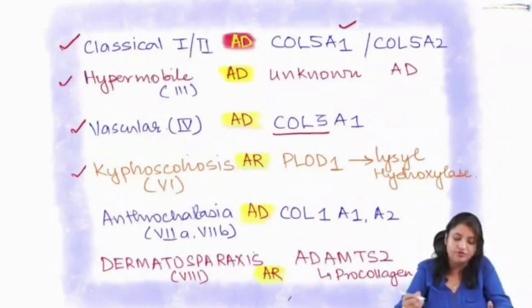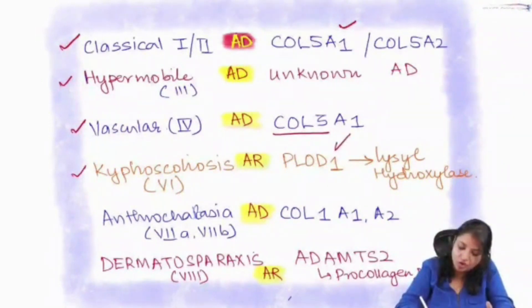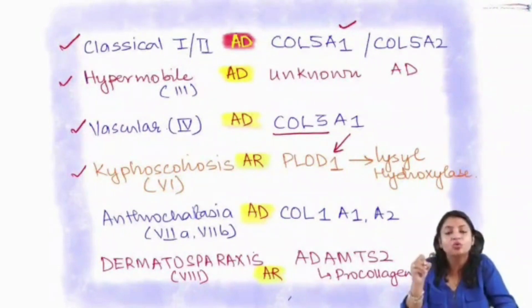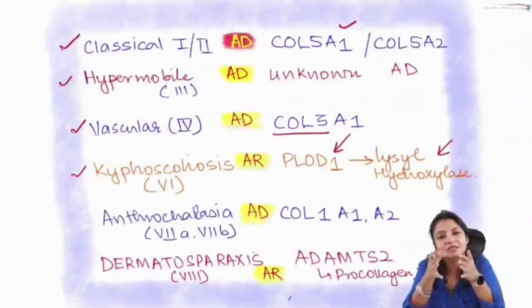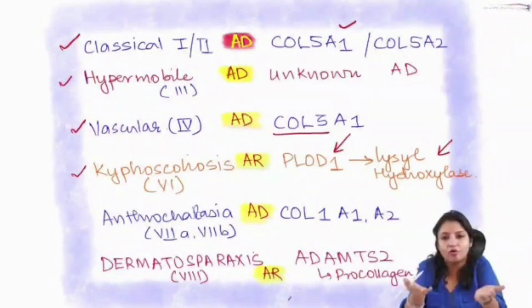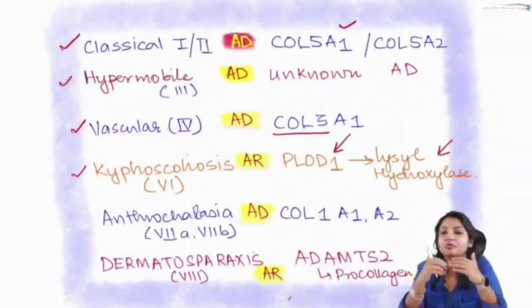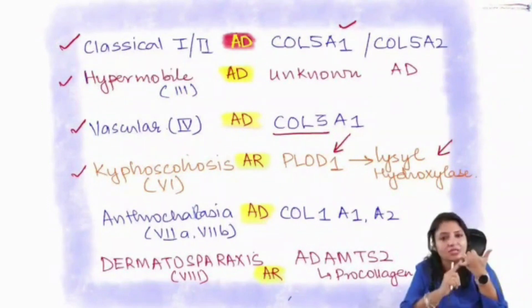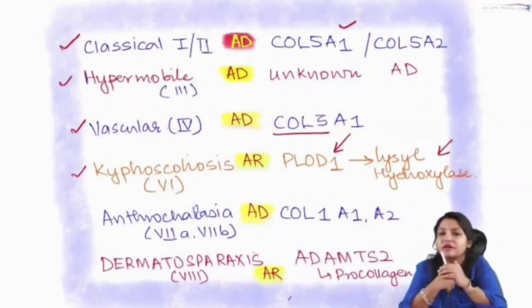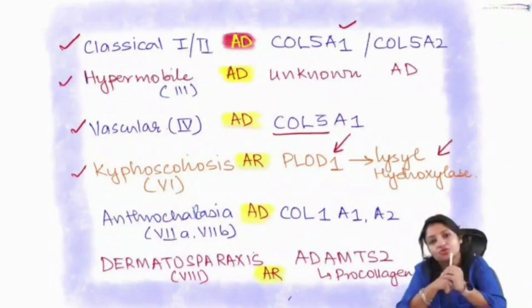Now the kyphoscoliosis type, which is type 4, involves a defect in the gene PLOD1. This gene codes for lysyl hydroxylase. Hydroxylation of lysine is very important for proper collagen formation. When PLOD1 is defective, lysyl hydroxylase is not formed properly, lysine residues are not hydroxylated, and proper collagen cannot be formed. Because this is an enzymatic defect, it is autosomal recessive in inheritance. These patients can present with retinal detachment.